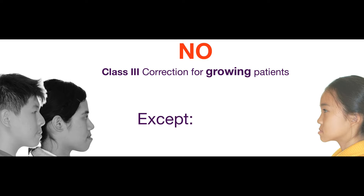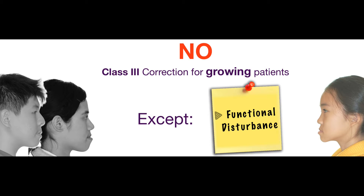So far we are talking about adult patients, but how about growing patients? I prefer non-Class 3 correction for growing children. Except there is a functional disturbance. Why? Because I'm not going to handle the uncertainty of the mandibular growth. But for functional issues, such as functional disturbance, severe crowding, or impaction, then I will consider it.